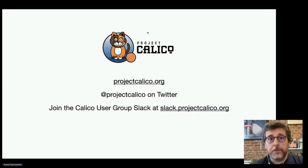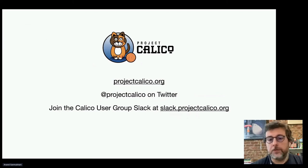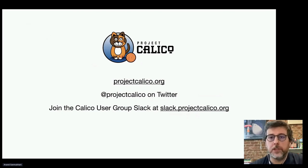If you're a Kubernetes user and need to enforce network policy, Calico is a great choice. You can give it a try at projectcalico.org, follow Project Calico on Twitter at @projectcalico, or join the Calico user group Slack at slack.projectcalico.org. There's also a monthly community meeting if that sounds appealing.